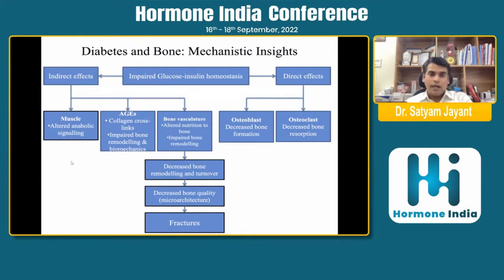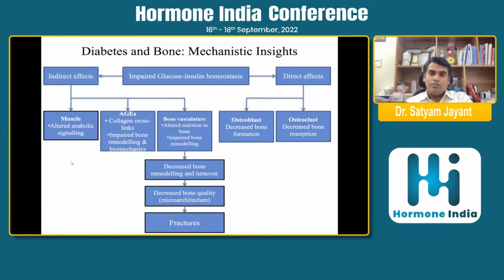Indirectly, diabetes affects muscle, and muscle weakness may lead to altered dynamic signaling. Deposition of advanced glycation end products leads to abnormal collagen cross-linking, impairing bone remodeling and biomechanics. Bone vasculature is also altered due to endothelitis of the distal bone end, leading to decreased vascular supply, altered microarchitecture, and further fracture risk.